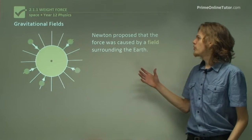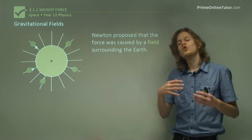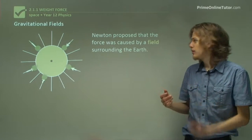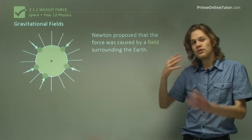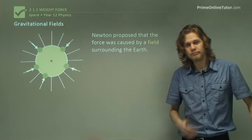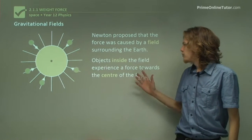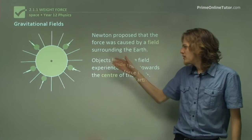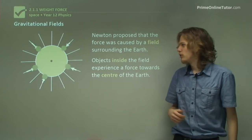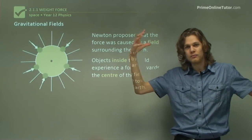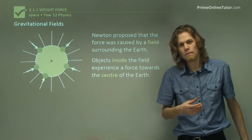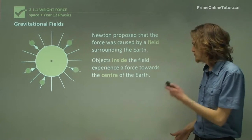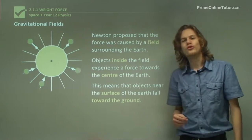So Newton proposed that the force was caused by an invisible field that extended all around Earth. That meant that objects in the field had a force applied to them. The force was pointed toward the center of the Earth. We can see that in this animation over here. All these various objects above the Earth are being pushed toward the center. So what would that mean if you were actually on the Earth? Well, it means that you would fall toward the ground.